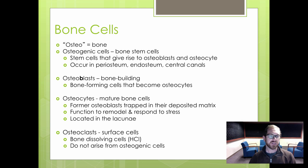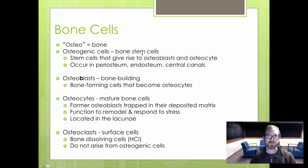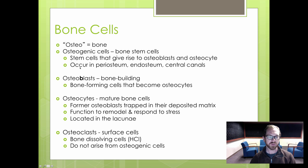Anytime you see the word 'osteo' in these next few labs, that refers to bones. Osteogenic cells are stem cells for bones — they give rise to osteoblasts and osteocytes. These osteogenic cells occur throughout the bone, but particularly in the periosteum, the endosteum, and the central canals, which we'll cover in this lab.